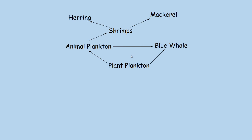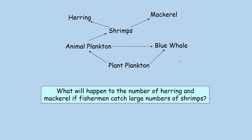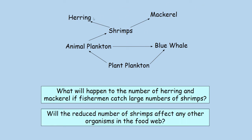However, biology is all about balance. The blue whale, noticing the animal plankton have disappeared, has to eat more plant plankton instead — so plant plankton numbers probably stay the same. And if we remove the animal plankton, everything above it — shrimps, herrings, mackerel — dies, because the shrimps no longer have a food source. What if fishermen caught large numbers of shrimps? Mackerel and herring numbers would go down too. This is why food webs need to be as complicated as possible.